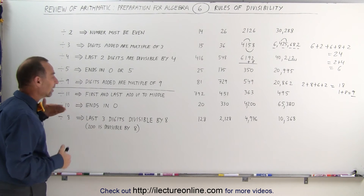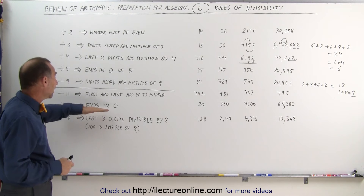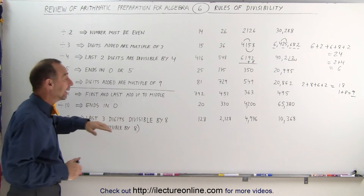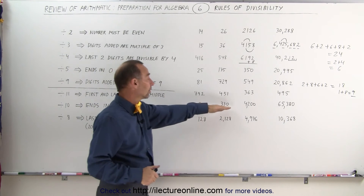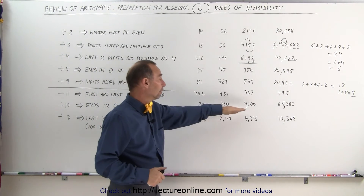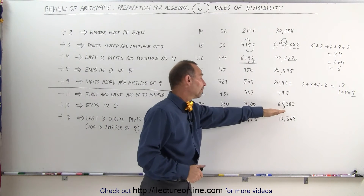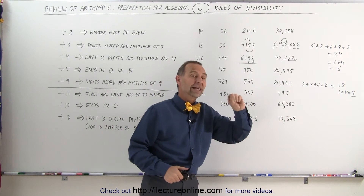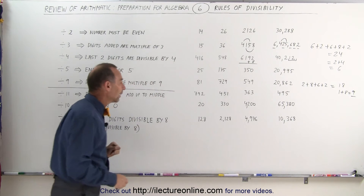Divisibility by 10 is very straightforward. As long as the number ends in a zero, it can be divided by 10. 20, 330, 4,200, 65,380 — as long as they end in zero, the number is divisible by 10.